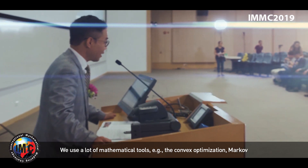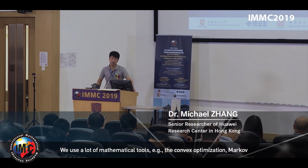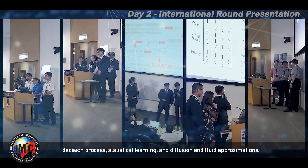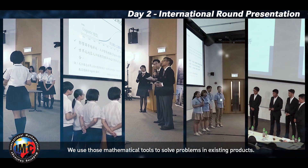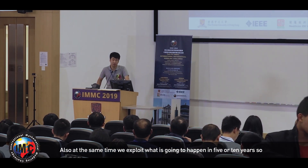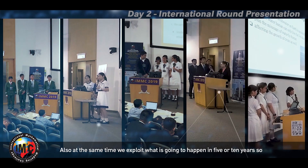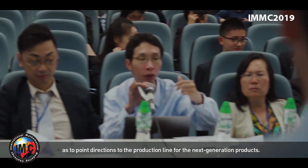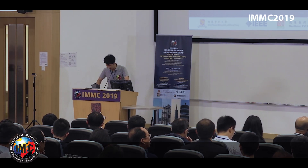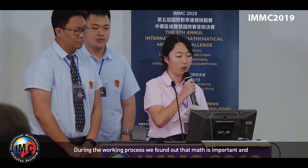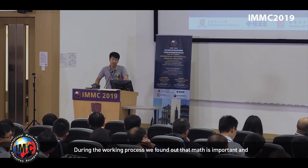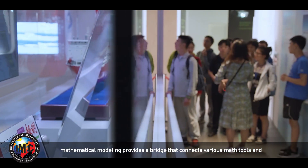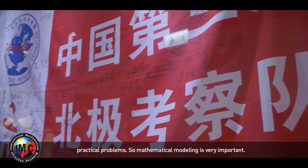We use a lot of mathematical tools — for example, convex optimization, Markov decision processes, statistical learning, and diffusion and fluid approximations. We use these mathematical tools to solve problems in existing products, and at the same time we explore what is going to happen in the coming 5 to 10 years, so we can point the production line in the direction of the next generation product. We found that math is important, and mathematical modeling actually provides the bridge between various mathematical tools and practical problems.